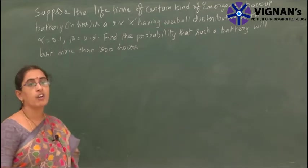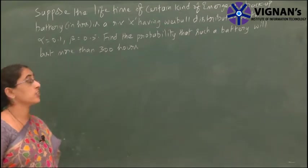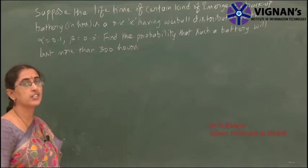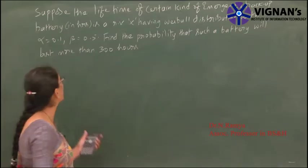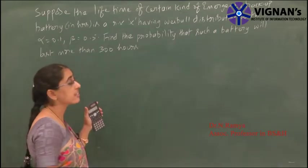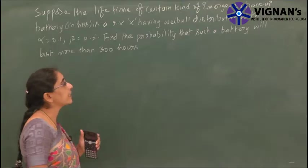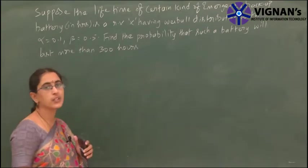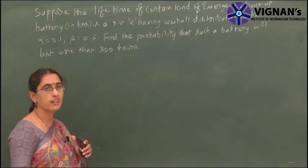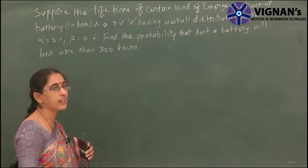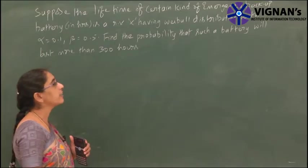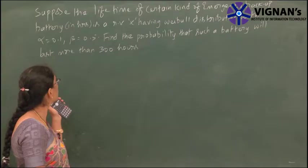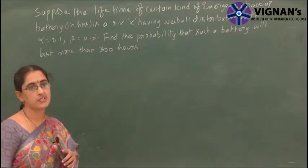See the problem on Weibull distribution. Suppose the lifetime of a certain kind of emergency backup battery in hours is a random variable X having Weibull distribution with alpha equal to 0.1 and beta equal to 0.5. Find the probability that such a battery will last more than 300 hours.